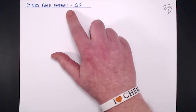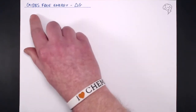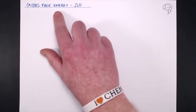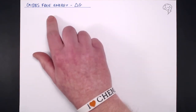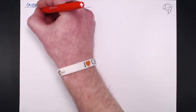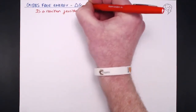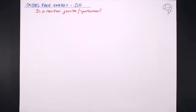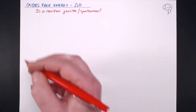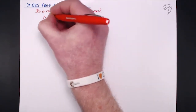Gibbs free energy, or delta G — what's it all about? Well, is a reaction feasible or spontaneous? This calculation takes into account all the different things that could indicate whether a reaction is going to happen or not. It basically takes into account the three major things that can contribute to whether a reaction is feasible: the energy change, and the enthalpy change in a reaction.